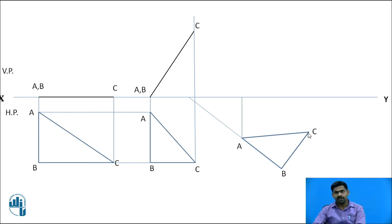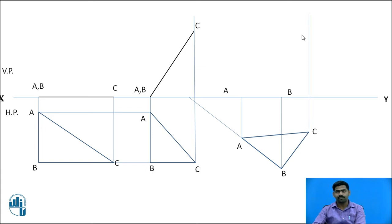Mark the ABC points. Now, draw the projectiles from point A to get the location for point A. From point B — which lies on the same axis as AB — you will get the second point B. Again, draw the projectile from point C and find the intersection point as point C. Now, join AB, BC, and AC. This is the final stage.